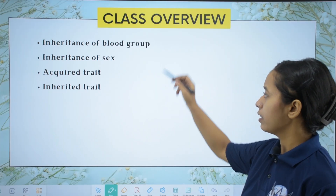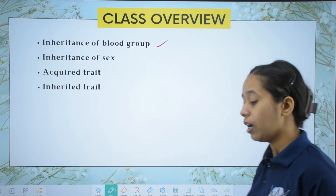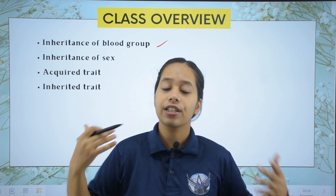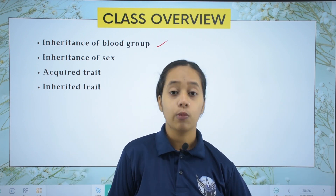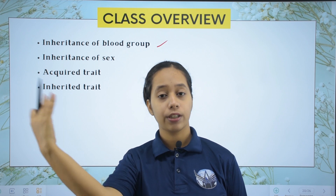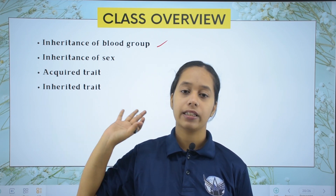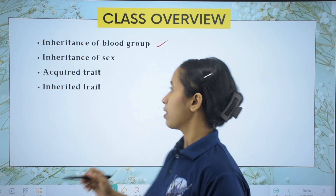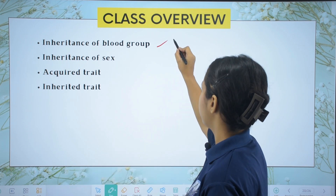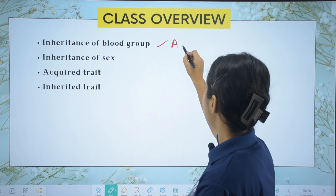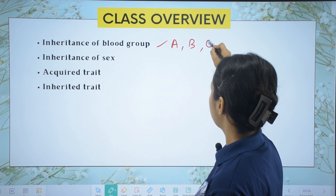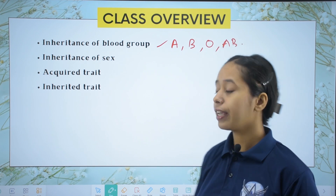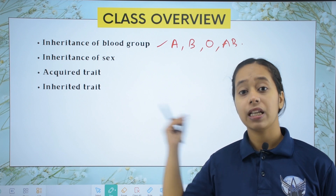Today we will be studying about inheritance of blood groups, physical features, and variations. Humans have variation in their blood groups. We have blood group A, blood group B, blood group O, and blood group AB.